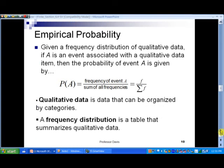And now in slide number 10, let's talk about the second weight we have. That's called empirical probability. So let's define that now. We can say given a frequency distribution of qualitative data, if A is an event associated with a qualitative data item, then the probability of A is given by, let's see, the number of times A occurs, divided by the sum of all the frequencies.